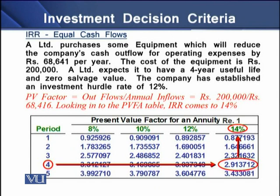To determine IRR where a company has equal cash flows, consider this example: we have an annual cash outflow of rupees 200,000 and annual inflows of rupees 68,416. Dividing the present value of cash outflow of 200,000 by annual inflows gives a figure of 2.913. Since the project has a 4-year useful life, we look horizontally across 4 periods in the present value interest factor annuity table towards the percentage rate. At 2.9137, we find a rate of 14%, so the IRR on this project is 14%.